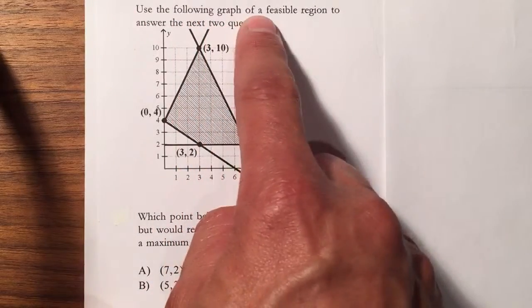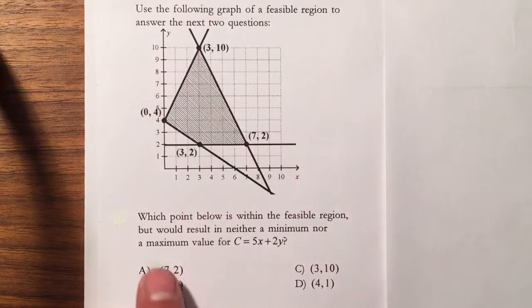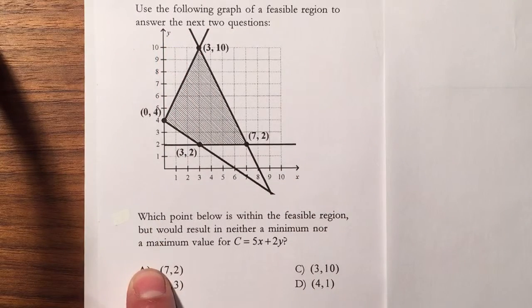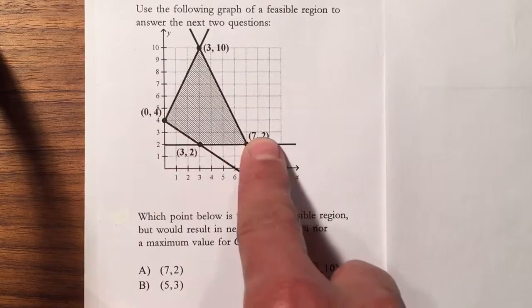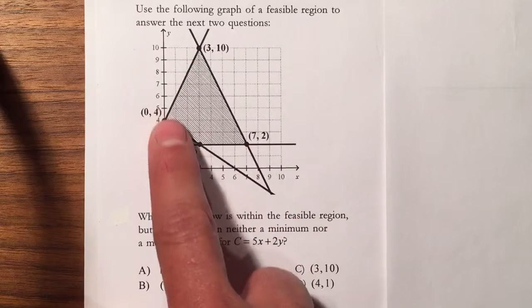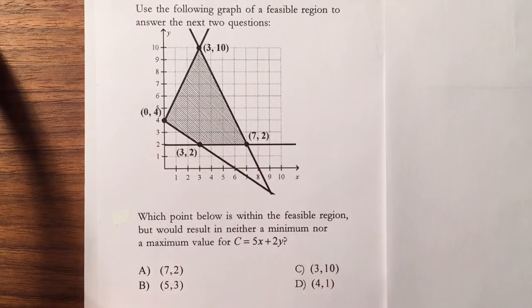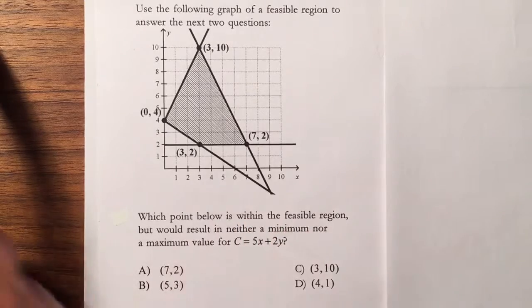Use the following graph of a feasible region to answer the next two questions. This is one of the questions - they give you a graph formed by four inequalities and only left a shaded area, and it also gives you the vertex points. Which point below is within the feasible region?